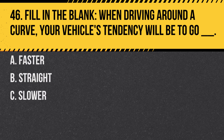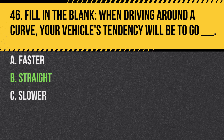Question 46. Fill in the blank. When driving around a curve, your vehicle's tendency will be to go ___. a. Faster. b. Straight. c. Slower. Answer: b. Straight. This is due to inertia, which resists changes in direction.